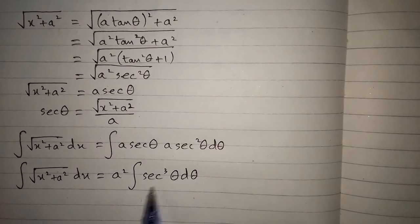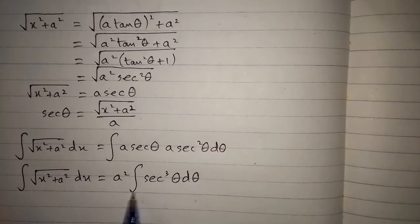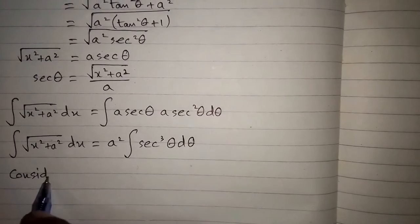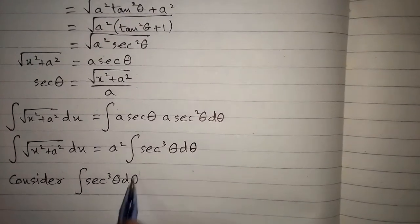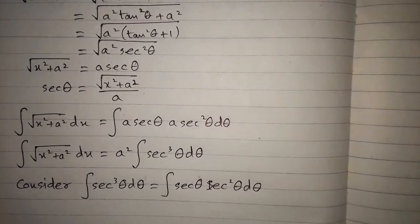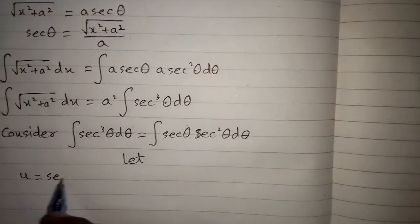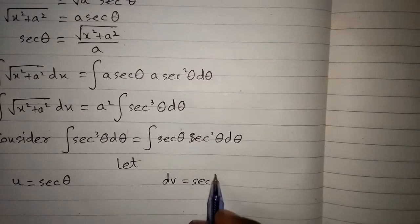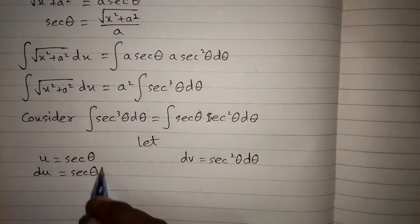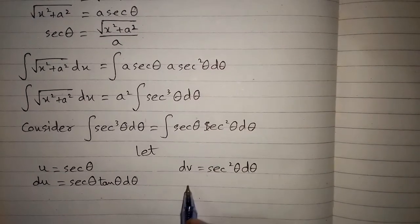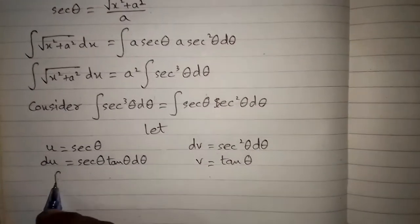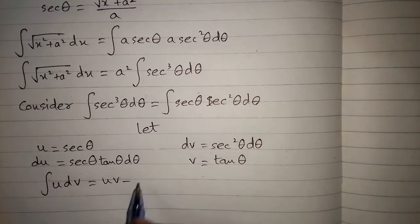Now we have to integrate sec cubed θ, so we will use integration by parts. We consider the integral of sec cubed θ as the integral of sec θ times sec squared θ. We let u equal sec θ and dv equal sec squared θ dθ. Then du equals sec θ tan θ dθ, and v equals tan θ, since the integral of sec squared θ is tan θ.